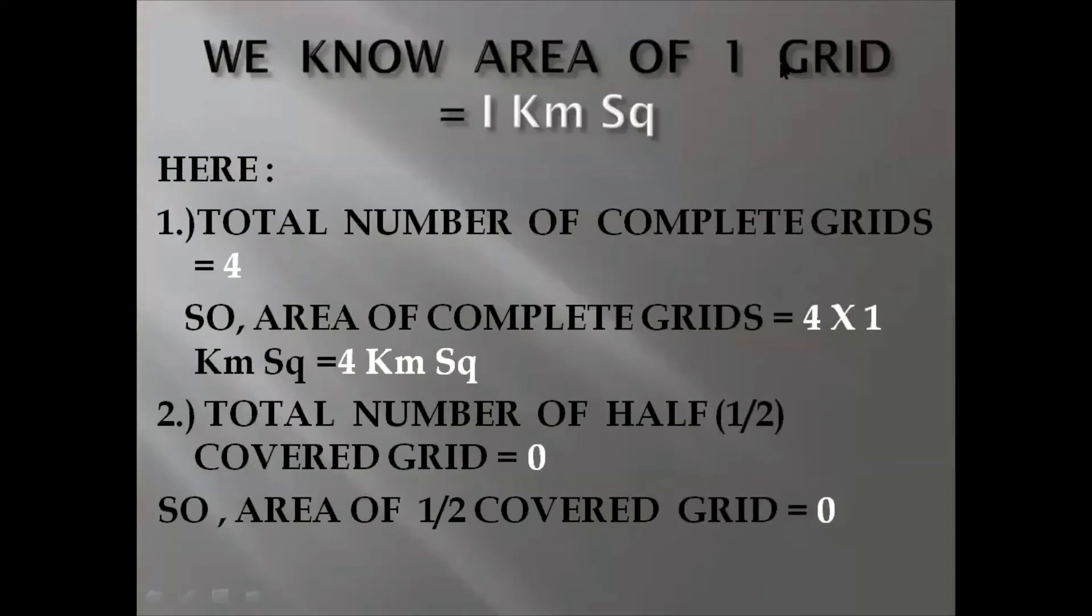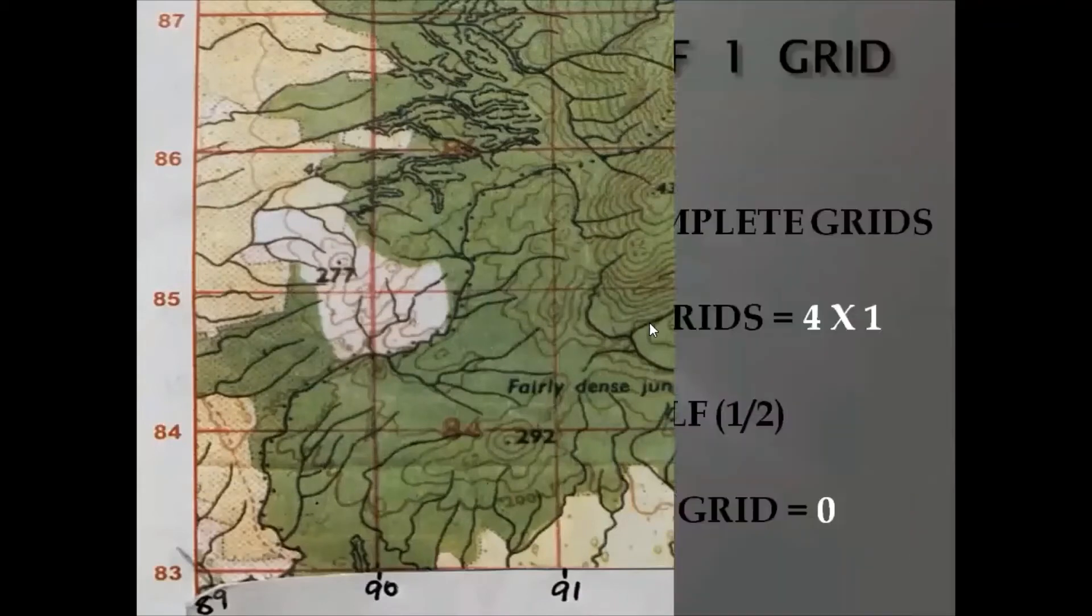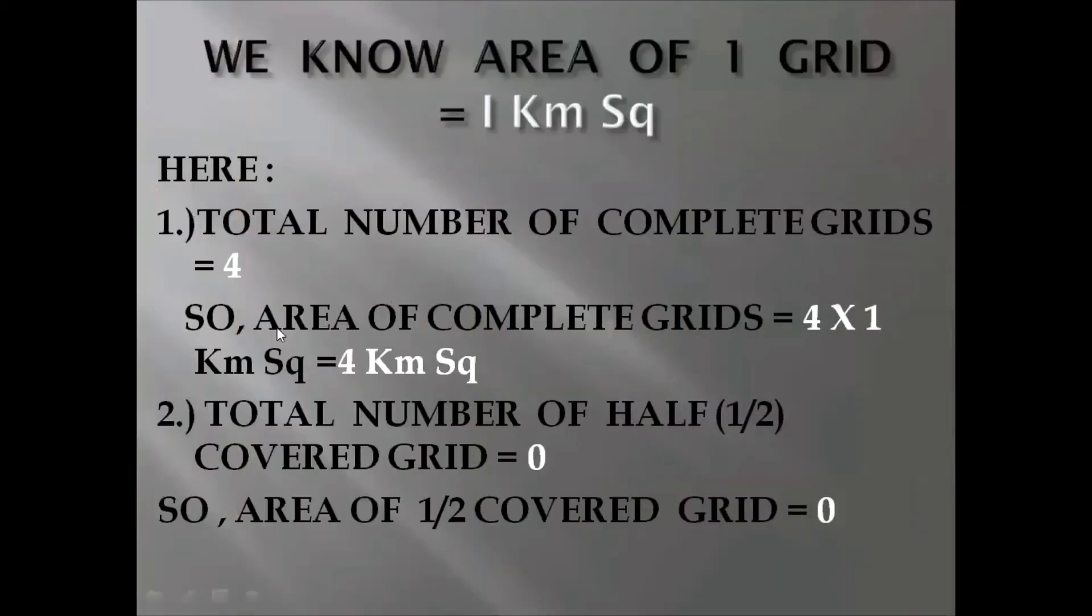We know area of 1 grid is equal to 1 kilometer square. Here total number of complete grids we will see 1, 2, 3 and 4. I have written 4 here and the area I have calculated that is 4 kilometer square.